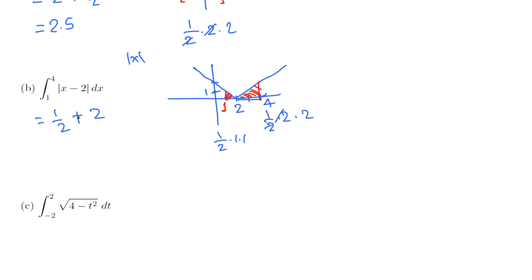That's 1 half plus 2, which equals 0.5 plus 2, or 2.5, or 5 halves. That's the area of this definite integral.